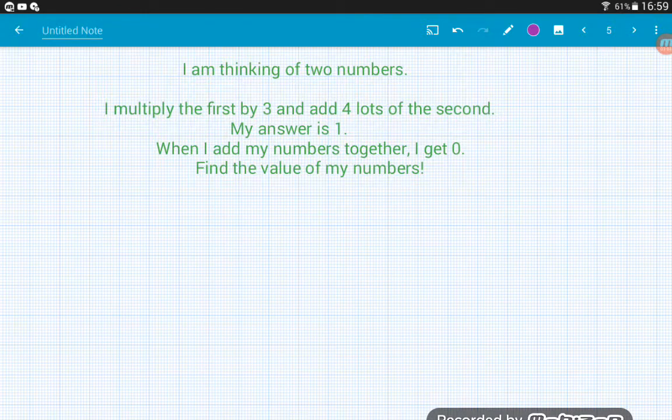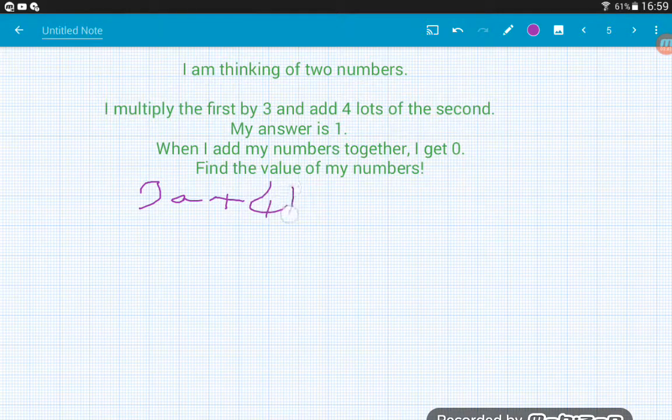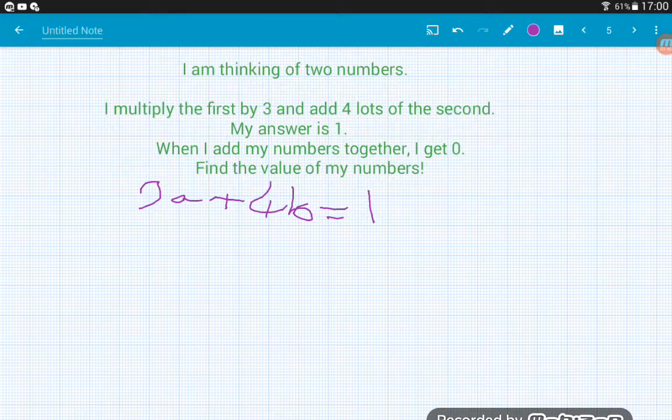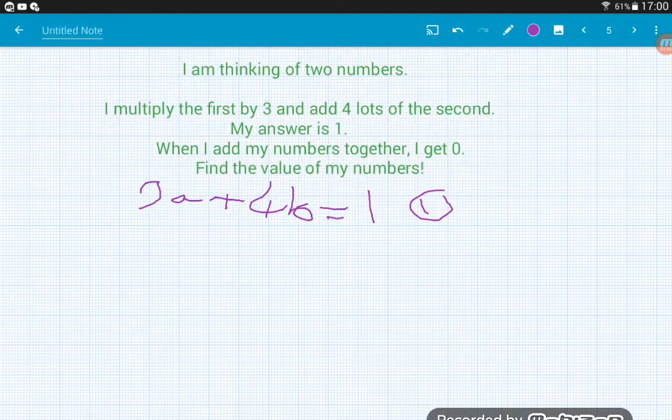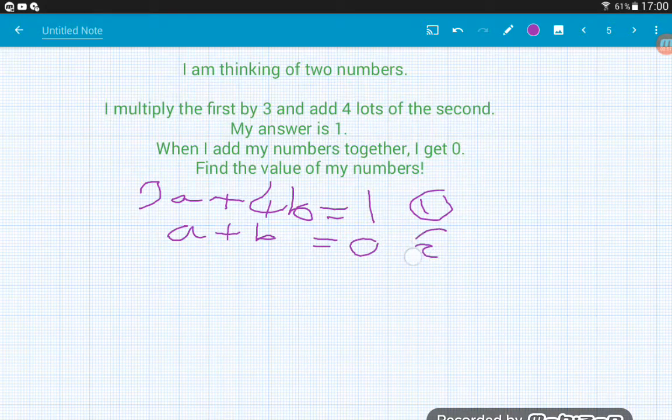I'm thinking of two numbers. I multiply the first by three and add four lots of the second and I get one for my answer. When I add my numbers together, I get zero. Find the value of my numbers. With a question like this, we first will need to work out what we're going to call our two numbers. I would just go for A and B and then let's turn each sentence into an equation. So I multiply my first number by three. That's the same as 3A and add four lots of the second. So 3A add 4B is equal to one and that's equation one. When I add my numbers together I get zero. So that's A add B and that gives me zero. So then we've got our equation two.